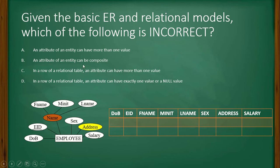An attribute of an entity can be composite. Yes. Because this is a composite. So an attribute of an entity can be composite. It is correct.